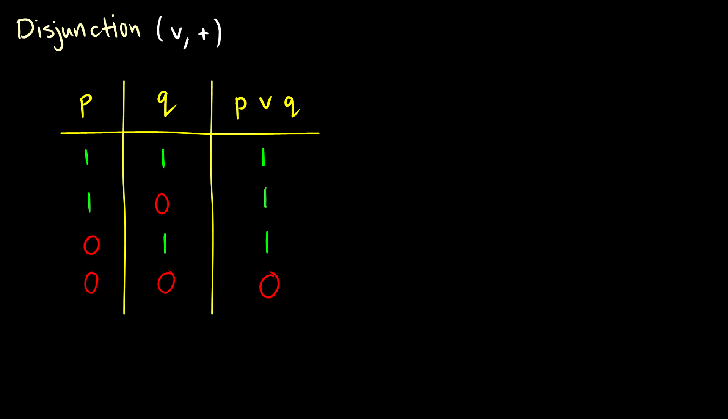So again, mathematically we can think of this as p OR q just takes the maximum of p and q. So in the first row both are ones; one is the highest value, so it's true. In the second row p is a one, that's the highest value, therefore it outputs a one. In the third row q is a one, which is the highest value, which means it outputs a one. But in the fourth row the highest value is zero, so we output a zero. That is disjunction.